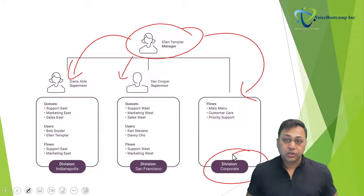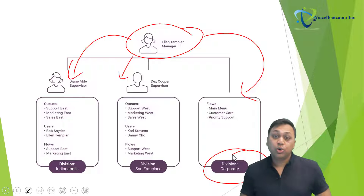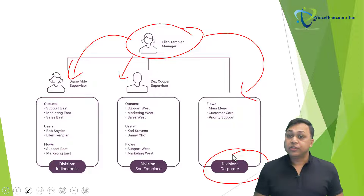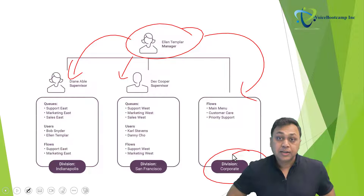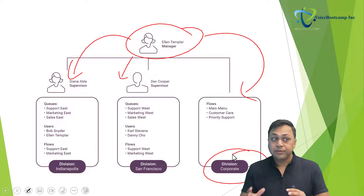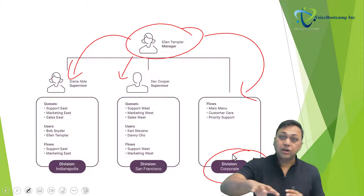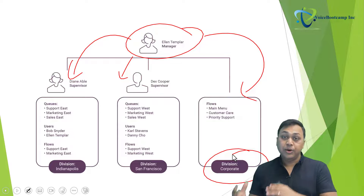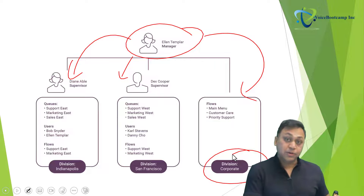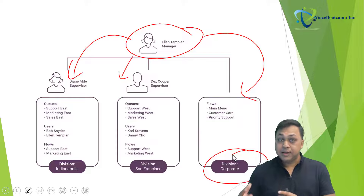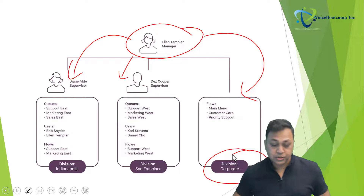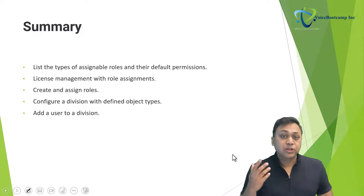The data Diane sees includes all conversations for any queue or agent in the Indianapolis division only. However, in an overflow scenario — for example, a call came into San Francisco but no agent was available, so an Indianapolis agent handled it — Diane may be able to see some of that data because of the overflow. This illustrates how you can use roles and permissions to manage your environment and control data visibility.